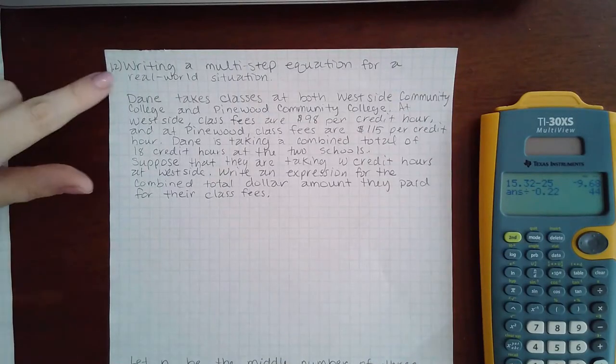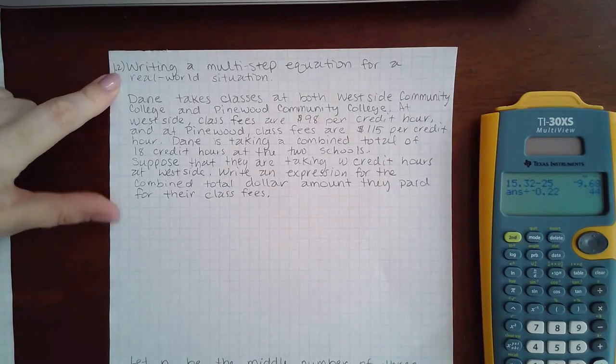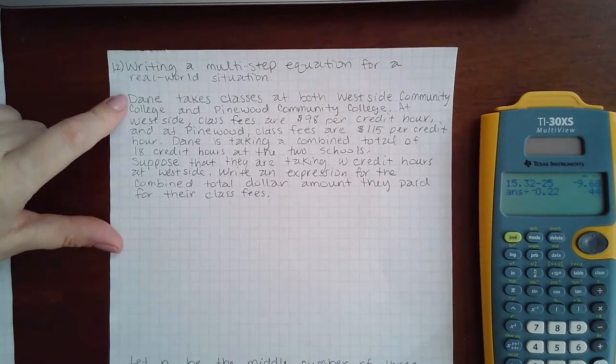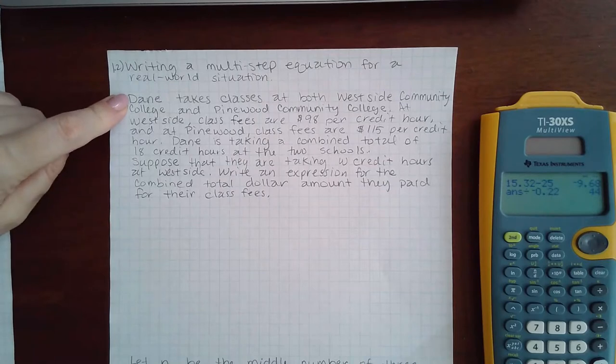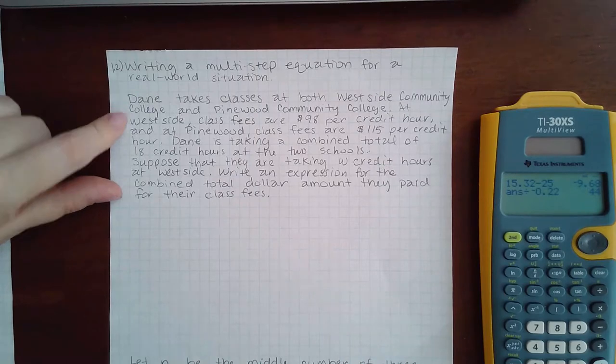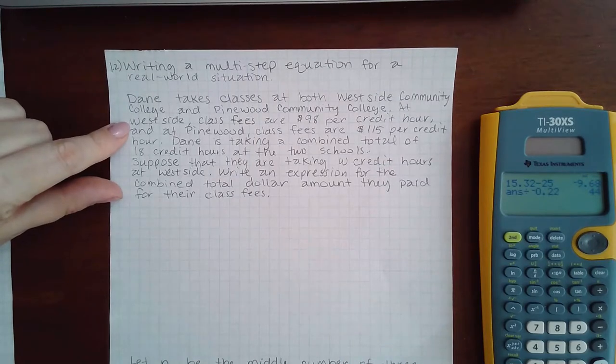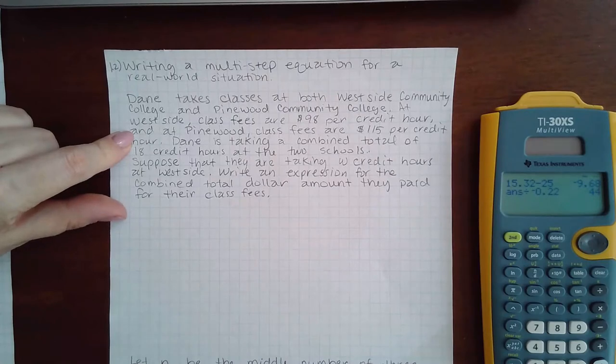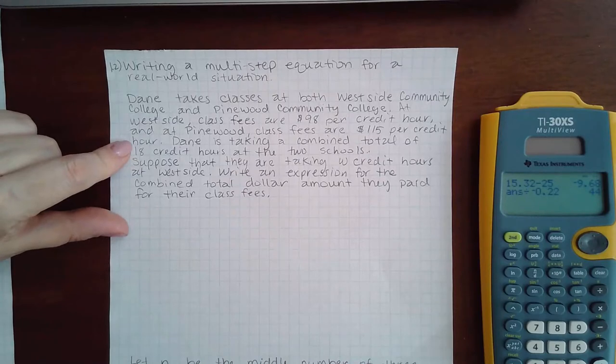Here we are on Topic 1.2: writing a multi-step equation for a real-world situation. It says Dane takes classes at both Westside Community College and Pinewood Community College. At Westside, class fees are $98 per credit hour. At Pinewood, class fees are $115 per credit hour. Dane is taking a combined total of 18 credit hours at the two schools.